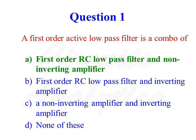A first-order active low-pass filter is a combination of first-order RC low-pass filter and non-inverting amplifier. So the correct answer is option number 1.